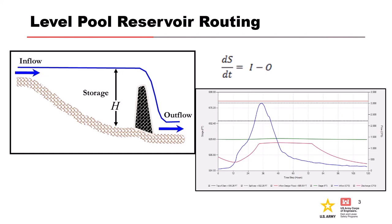For these types of reservoir routing operations, we assume level pool routing — pool is level, inflow minus outflow equals change in storage. There are cases where you have really large or long reservoirs where level pool routing might not be an appropriate assumption, and every once in a while you can't use this, but this is generally a pretty good approach.